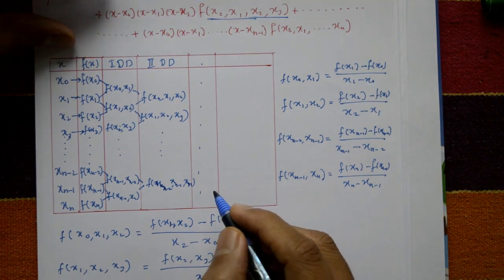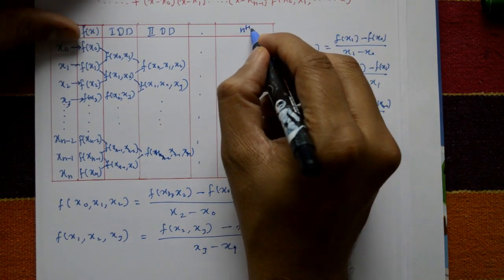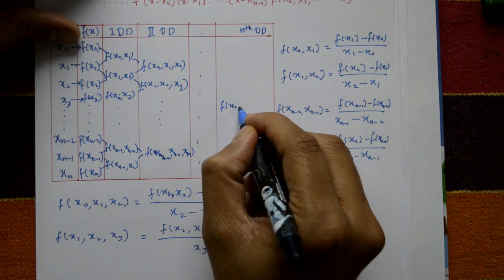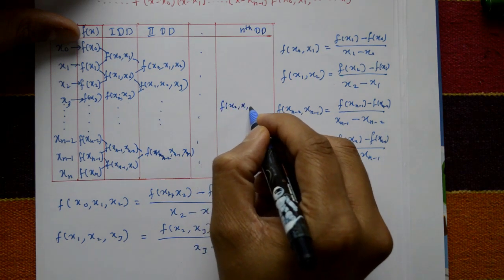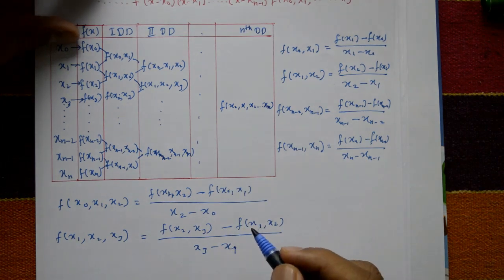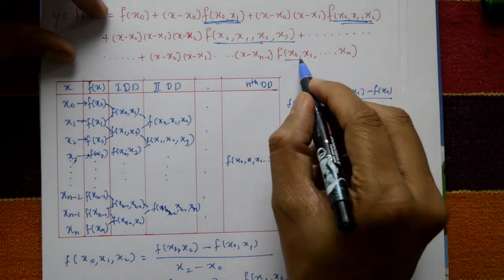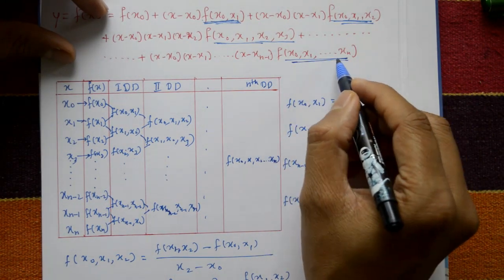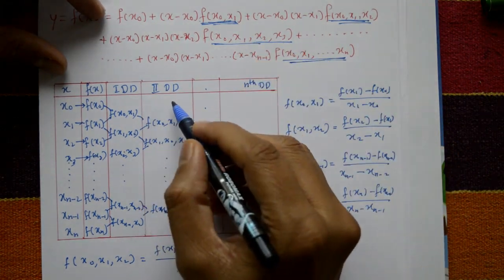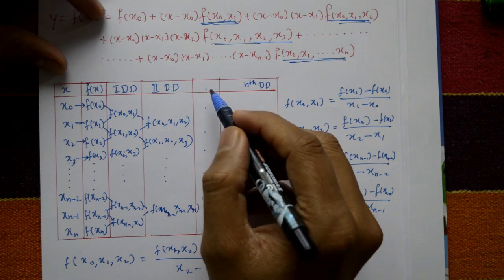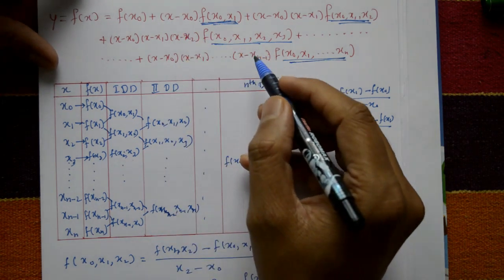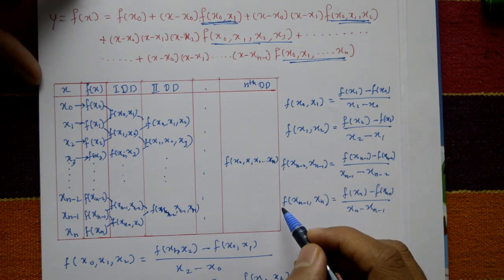These terms continue up to the nth divided difference: f[x₀,x₁,x₂,...,xₙ]. In most problems, you will use the first divided difference, second divided difference, and at most the third divided difference. This completes Newton's divided difference formula.